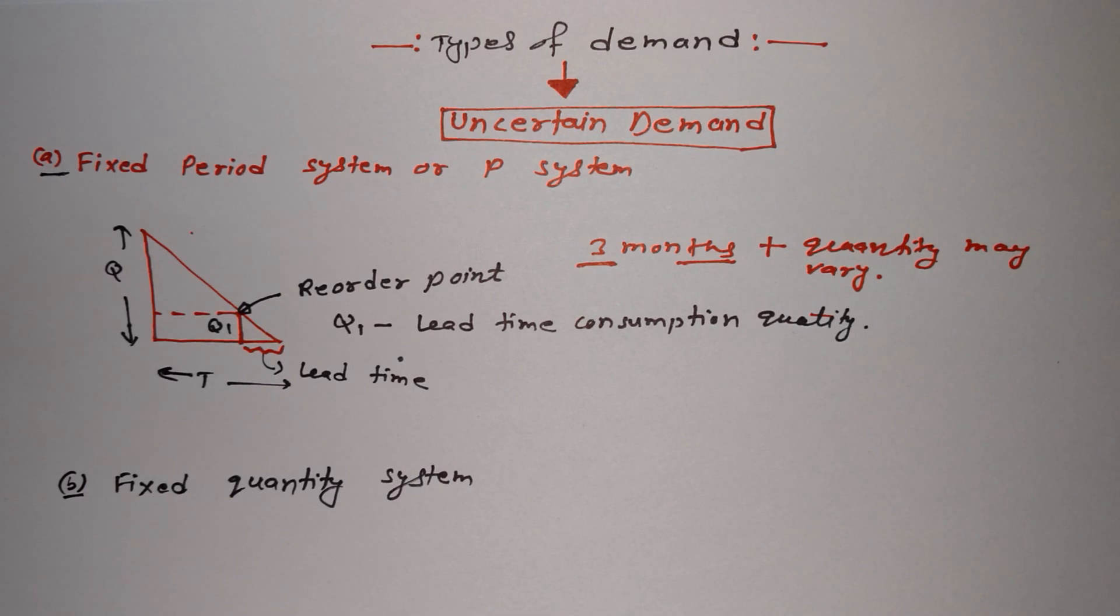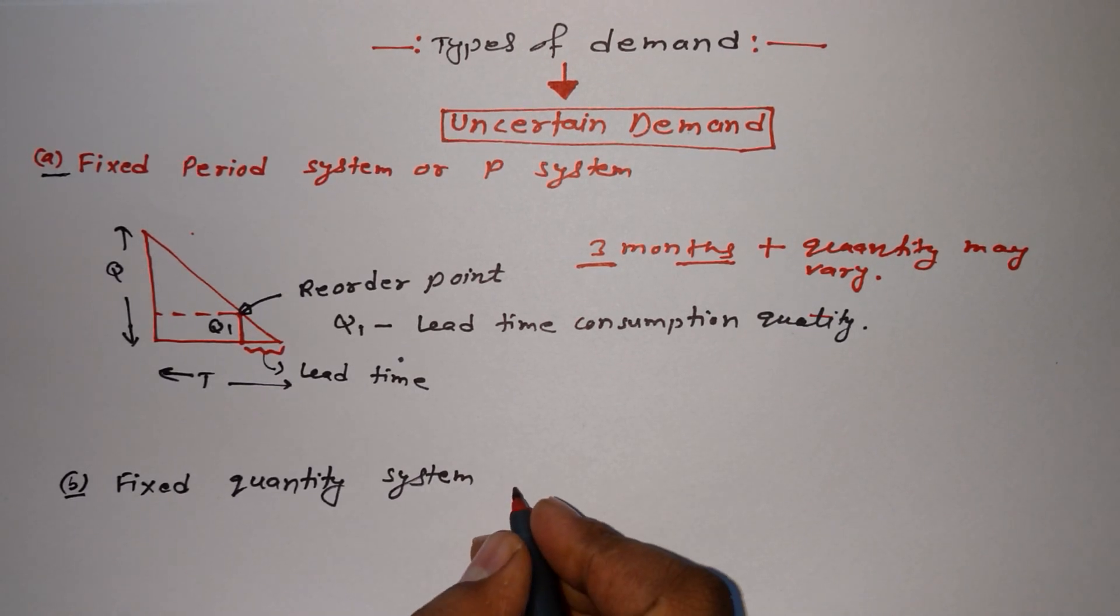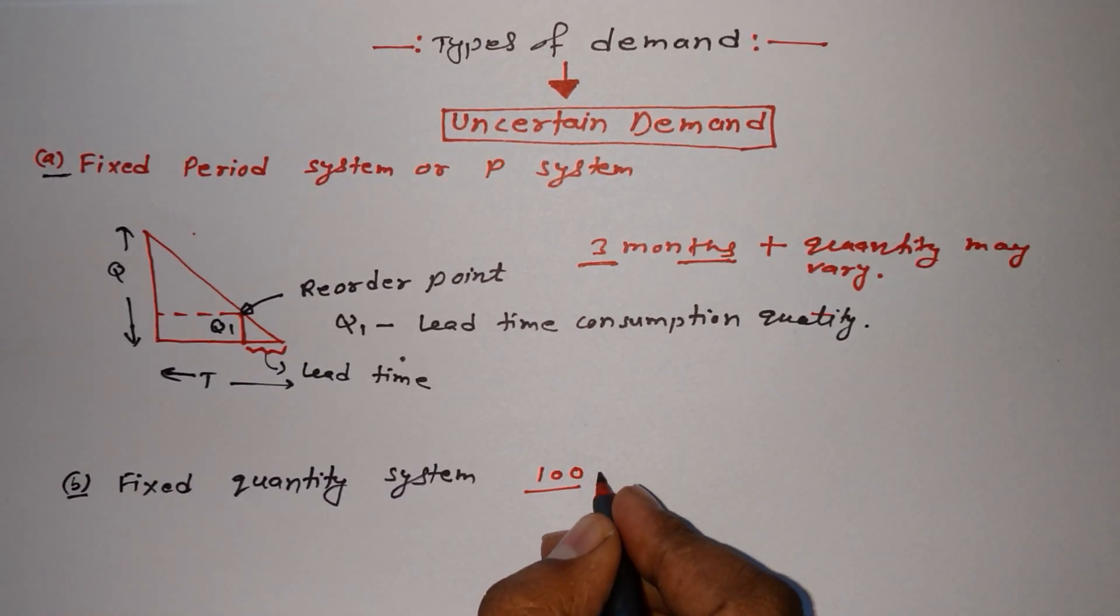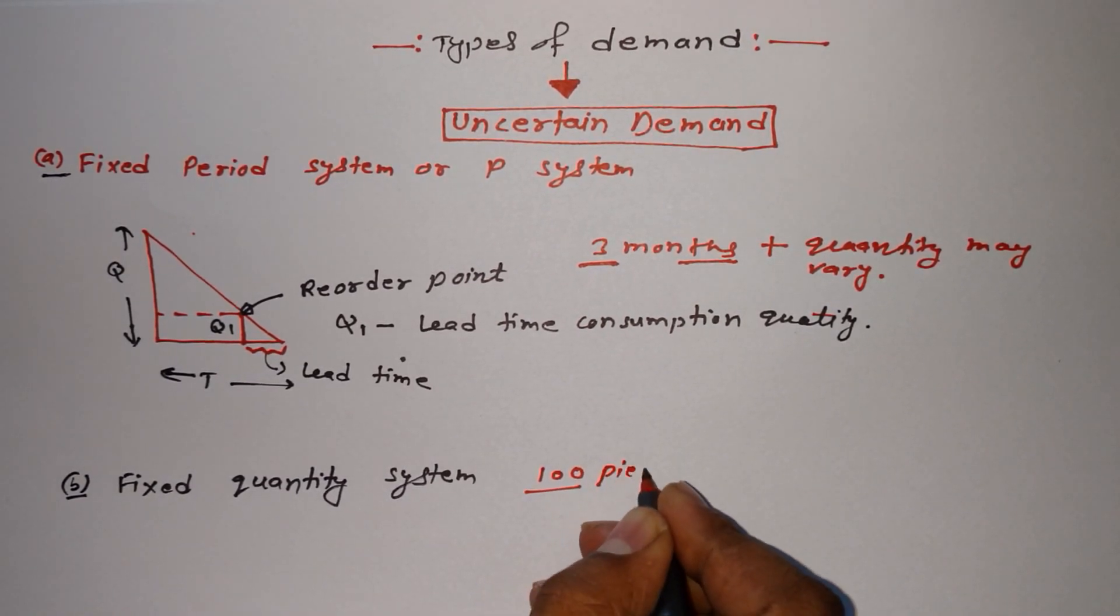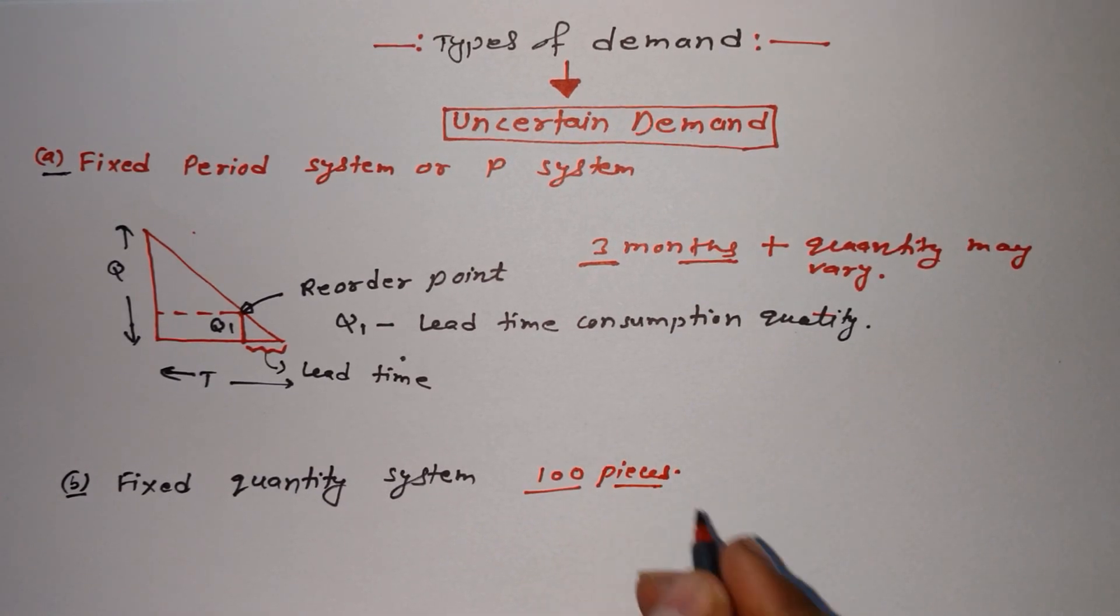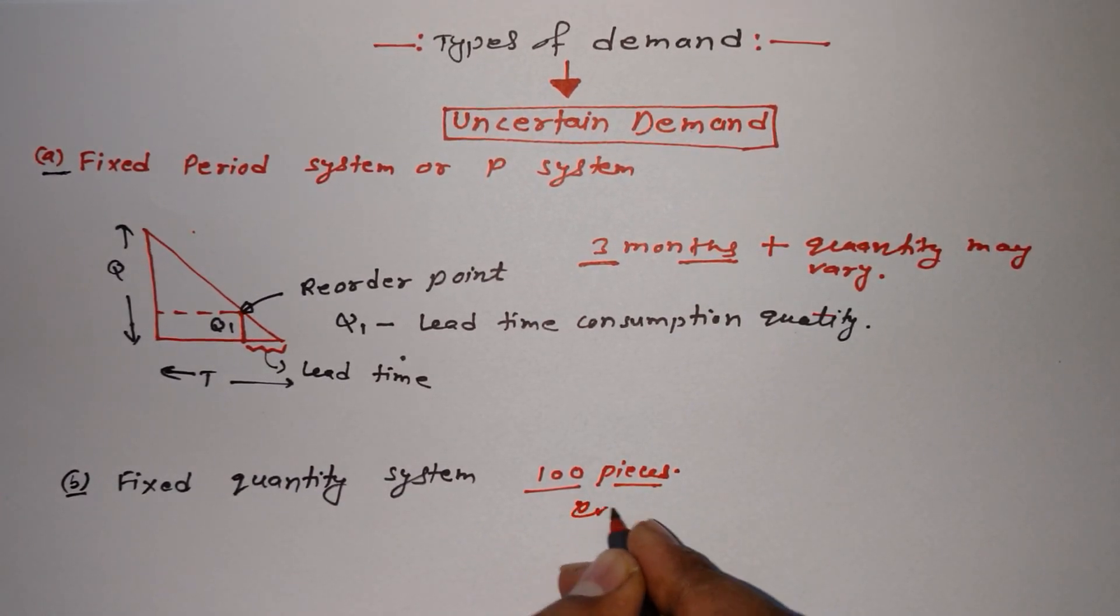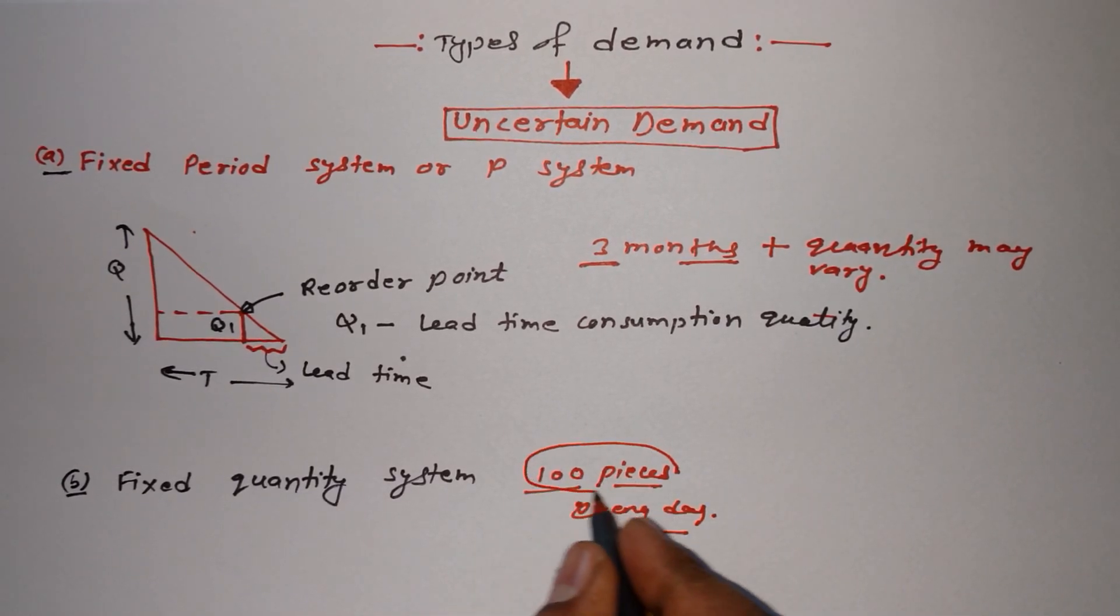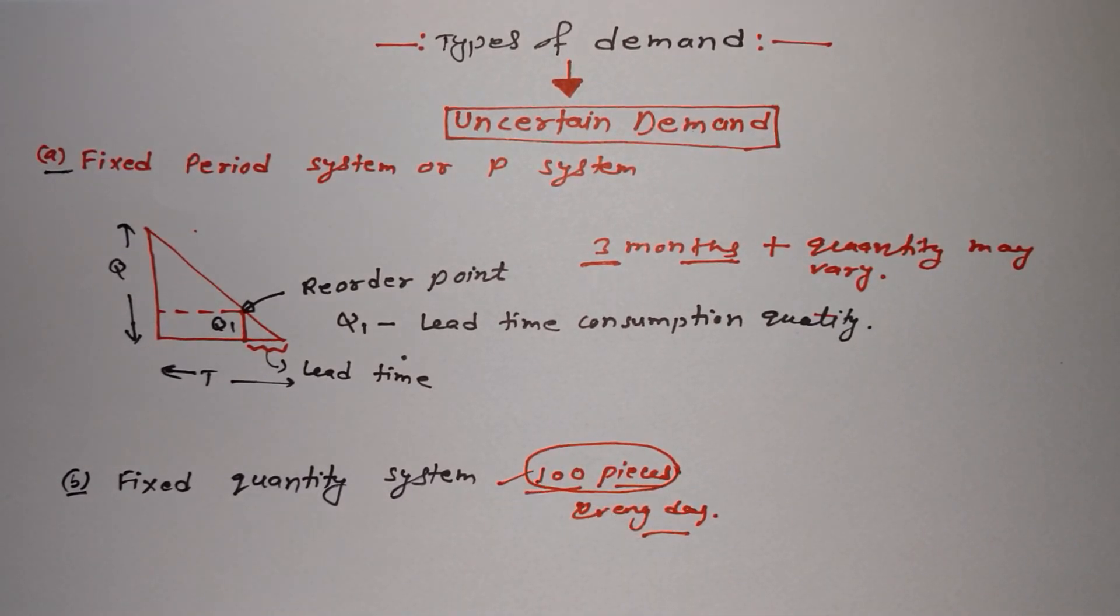In the peak season, we may order 100 pieces of anything every day, but quantity would be fixed. Are you getting me? So basically quantity is fixed, but time period will not be fixed.